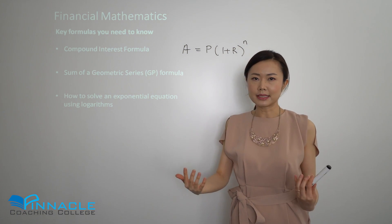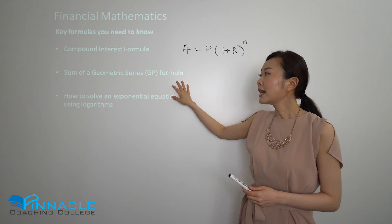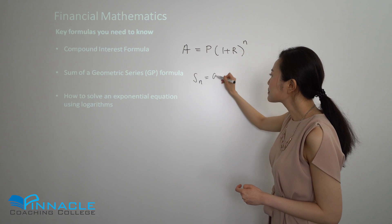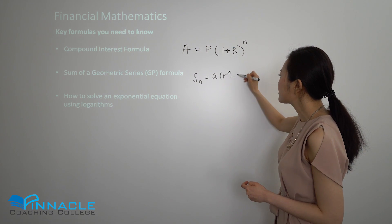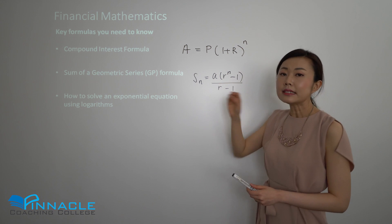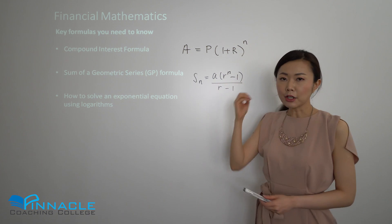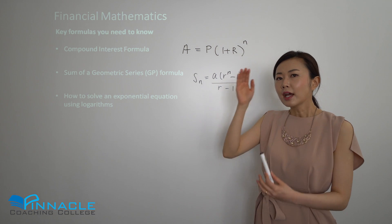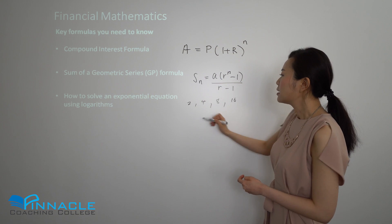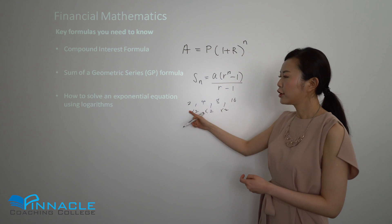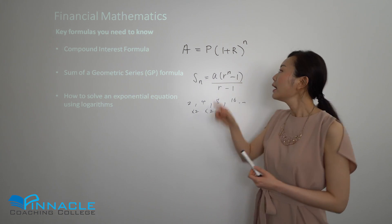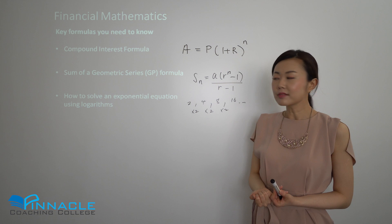Second thing is you also need the sum of a GP formula. If you don't remember what that is, it's basically this formula here. Sum of GP formula: a is the first term in the sequence, r is the common ratio. Remember what a GP is - for example, something like 2, 4, 8, 16. It's going up by some common ratio. In the example I've given you, it's going up by a common ratio of 2, and that's what r is in the context of this formula. n is the number of terms you are trying to add.